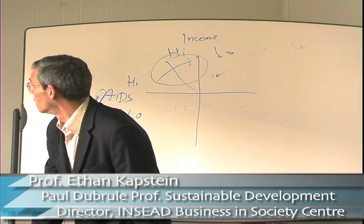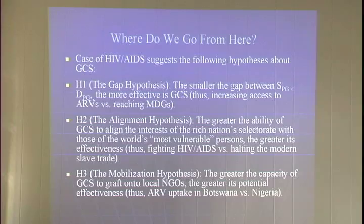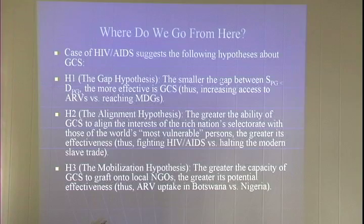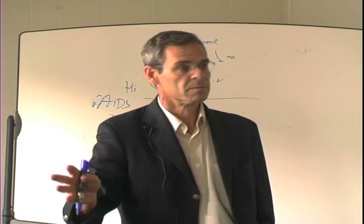So where do we go from here? I would suggest the following hypotheses about global civil society. First, the gap between the supply and demand of public goods — the smaller that gap is, the more effective civil society is going to be. So global civil society is very effective in this ARV campaign. It hasn't been very effective with respect to the Millennium Development Goals. We're very far from any of the Millennium Development Goal targets, but those are big targets.